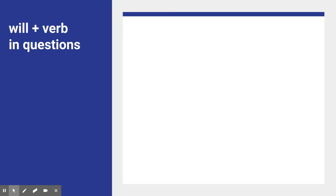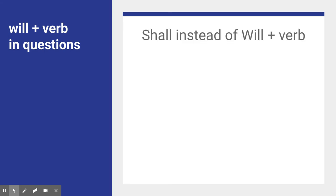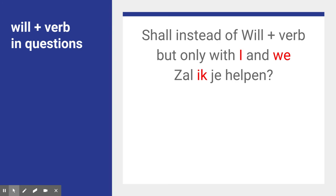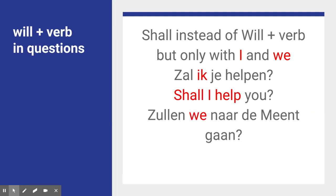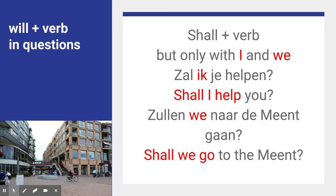Sometimes you ask somebody something spontaneously — then we have questions. And then you have to use 'shall' instead of 'will' plus verb, but only with 'I' and 'we'. Pay attention: 'Zal ik je helpen?' — that is a question. You see somebody drowning in the water, so you say 'zal ik je helpen?' You can't say 'will I help you?' — you have to say 'shall I help you?' The boy shouts 'please get me out of the water, I can't swim!' So: 'shall I help you?' Another example: 'zullen we naar de Meent gaan?' — 'Shall we go to the Meent?' Because it is 'we' and because it is 'I', you have to use 'shall' and not 'will'.